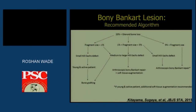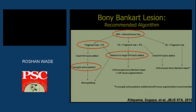Finally, the algorithm for bony Bankart lesion management: when there is more than 20% bone loss, analyze the amount of bone fragment retained. If the retained fragment is between 1% and 5%, proceed with fixation of the fragment. If it is less than 1%, bone grafting — such as the Latarjet procedure — is required. Thank you very much.